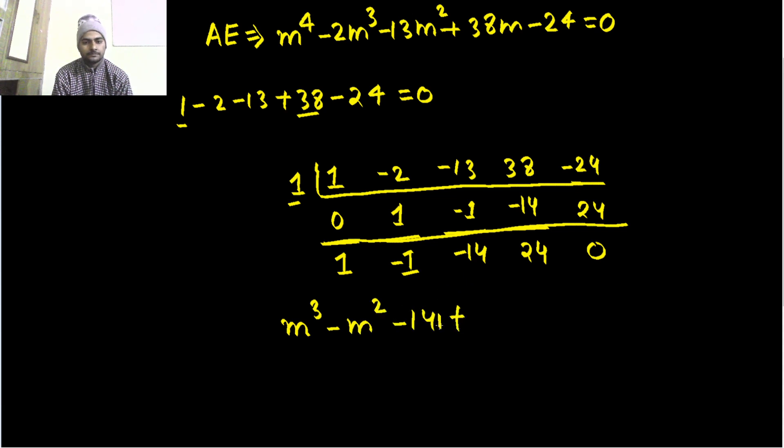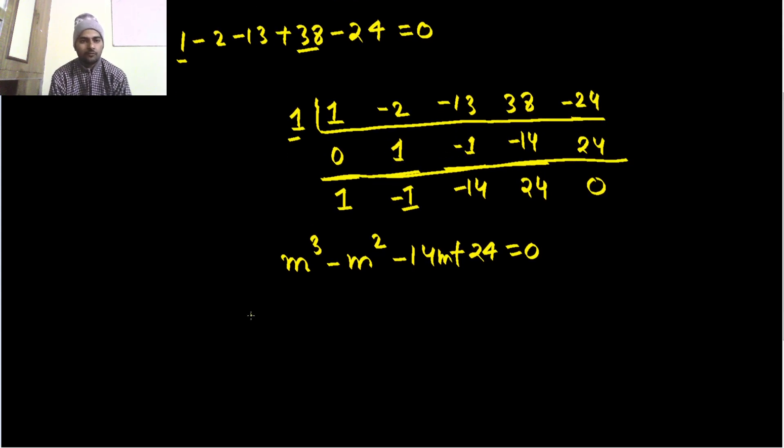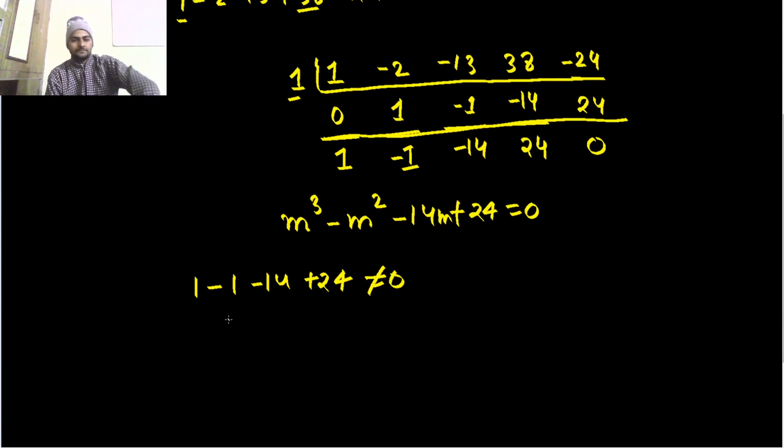Again hit and trial. Let's check for 1: 1 - 1 - 14 + 24, not zero. Check for -1: -1 - 1 + 14 + 24 = 36, not equal to 0. Check for 2: 2^3 - 2^2 - 14(2) + 24...